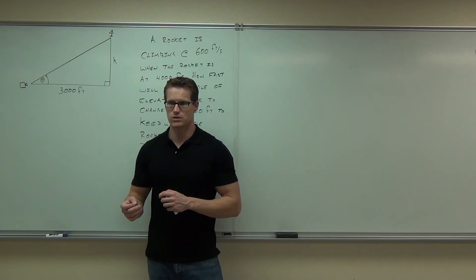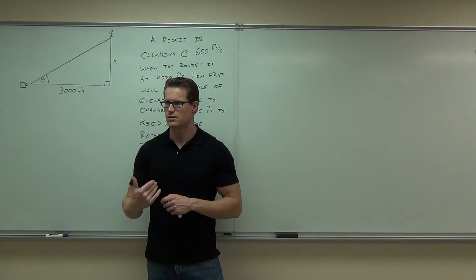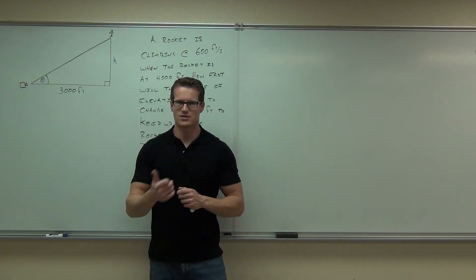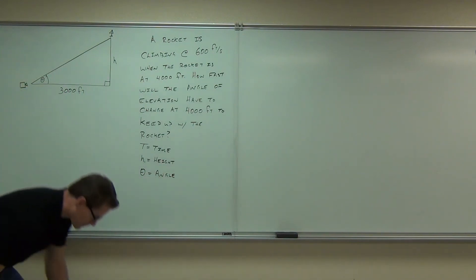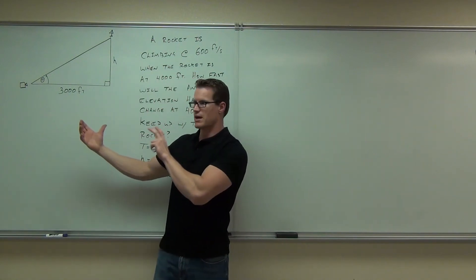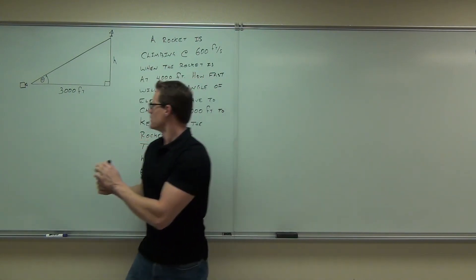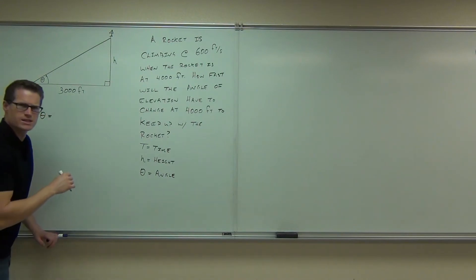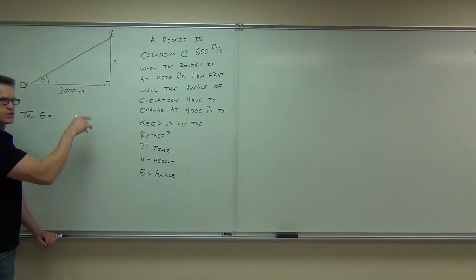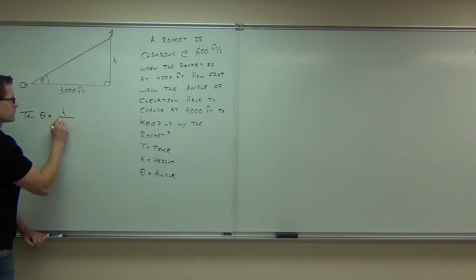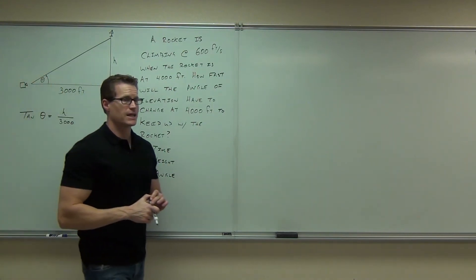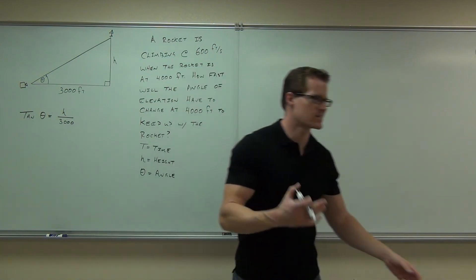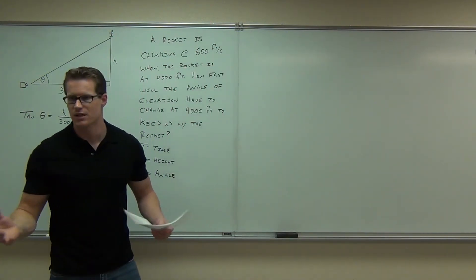Tangent would do it. Tangent is opposite over adjacent — and yes, opposite over adjacent. What is opposite over hypotenuse? What's adjacent over hypotenuse? Tangent is opposite over adjacent. So does our tangent of θ have to do with the material that we have on the board? So tan θ equals H over 3,000. Are you seeing where I'm getting that from? You've got to have an angle in there that's typically dealing with some trigonometry. If it doesn't involve an angle, you probably don't have to use trigonometry. This one we certainly do.